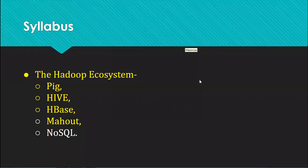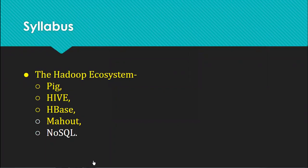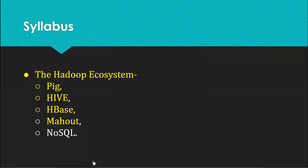To summarize: Pig is a Latin script language where scripts are written. Hive is very similar to SQL where SQL-type queries are written. HBase is a NoSQL column-type database used when you have a huge amount of real-time data to process. Depending on your data type, analysis requirements, query type, and storage needs, you pick the appropriate Hadoop component. Mahout and NoSQL will be covered tomorrow.